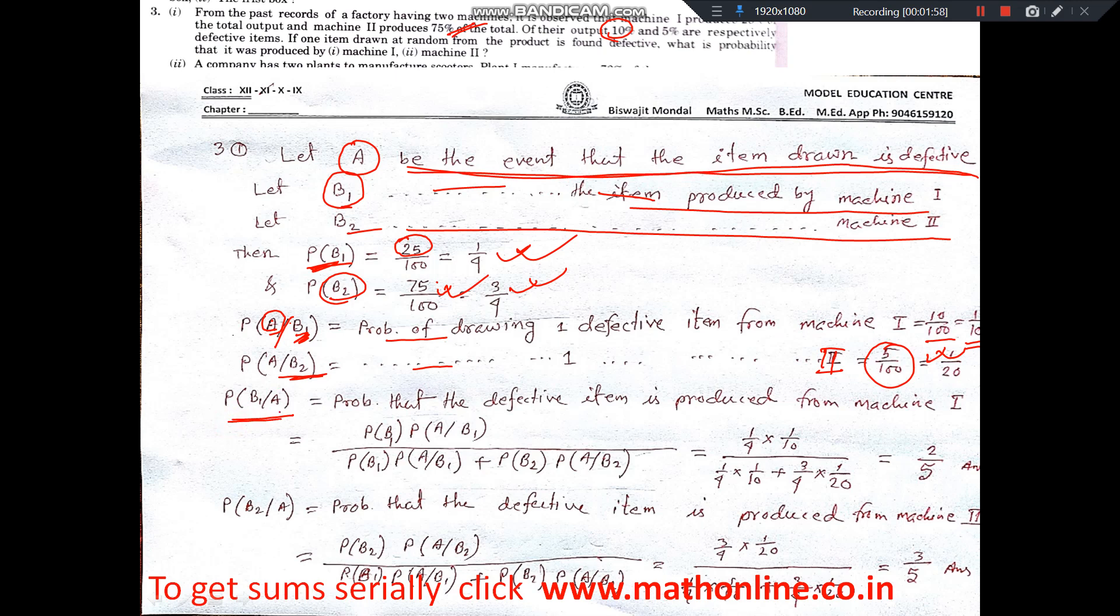Now, B1 slash A means the probability that a defective item was produced by machine 1. I have written the formula here. I explained in the previous problem how to write this formula. Now, put all the values you have and get the answer.